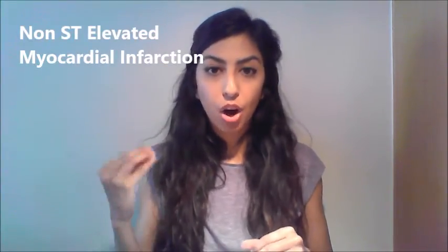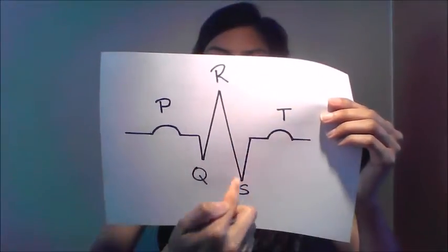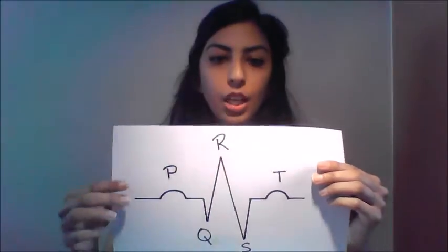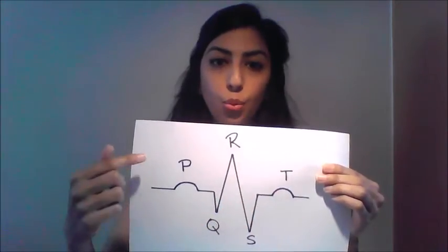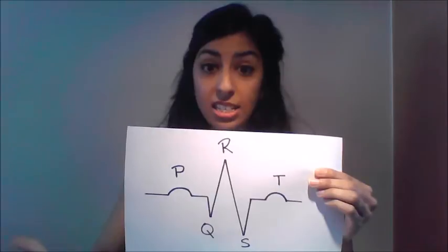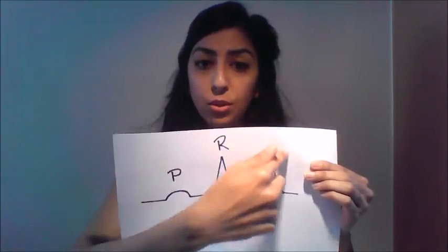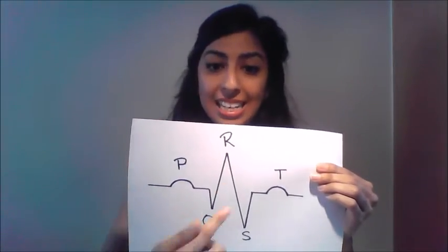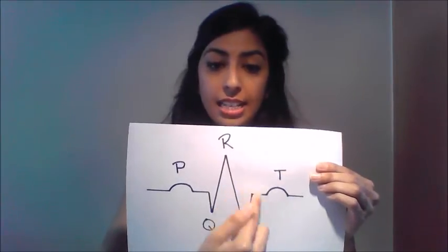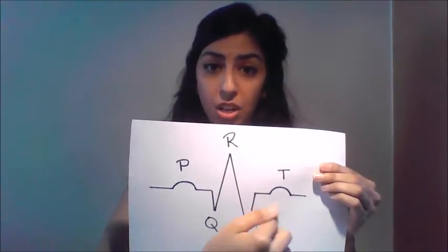Looking at the term NSTEMI, it stands for non-ST elevated myocardial infarction, whereas STEMI stands for ST elevated myocardial infarction — referring to the ST segment of the ECG. In a STEMI, the ST segment is elevated, so on the ECG it will be squiggled upward, whereas in an NSTEMI the ST segment is not elevated — it will be depressed downward.